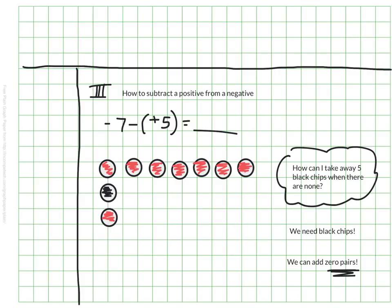Now, I still don't have enough chips to take away. I just have one black chip. So I'm going to add another, and another, and another, and another. I'm going to stop here because now, looking at the model, I see that I finally have 5 black chips that I can take away. And that's our goal, to take away 5. So let's do that.